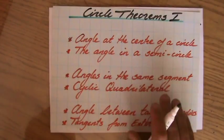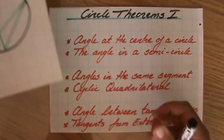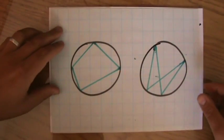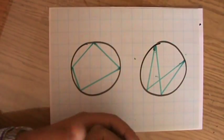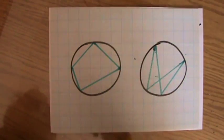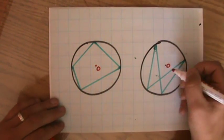While the other two circle properties, angles in the same segment and cyclic quadrilaterals, they do not have to go through the center of a circle. So for instance, this could be a cyclic quadrilateral and this is an example of a question of angles in the same segment. Where you can see that the center of the circle is roughly here and roughly there.